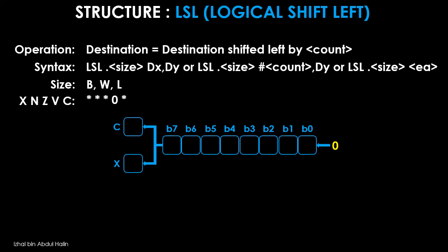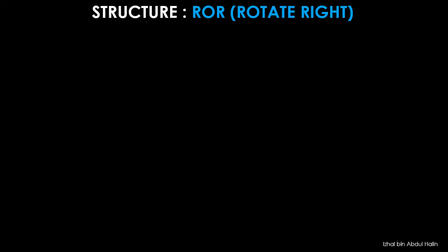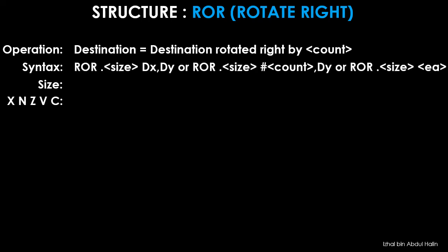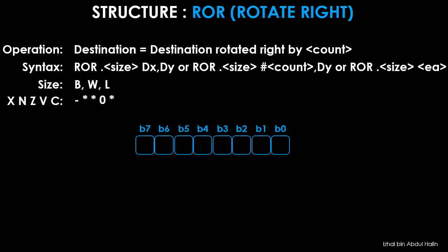We begin the rotate instructions with the ROR instruction, used to rotate right data in a destination operand. Data is rotated one bit at a time until the number of rotations equals the specified count. The general syntax shows three variants, with operand sizes of byte, word, and long word. All status registers except the X flag are affected. In the register structure, the C flag is connected to the LSB, and the LSB is also connected to the MSB. Each time data is rotated, bit 0 data wraps around into bit 7 and is also moved into the C flag.